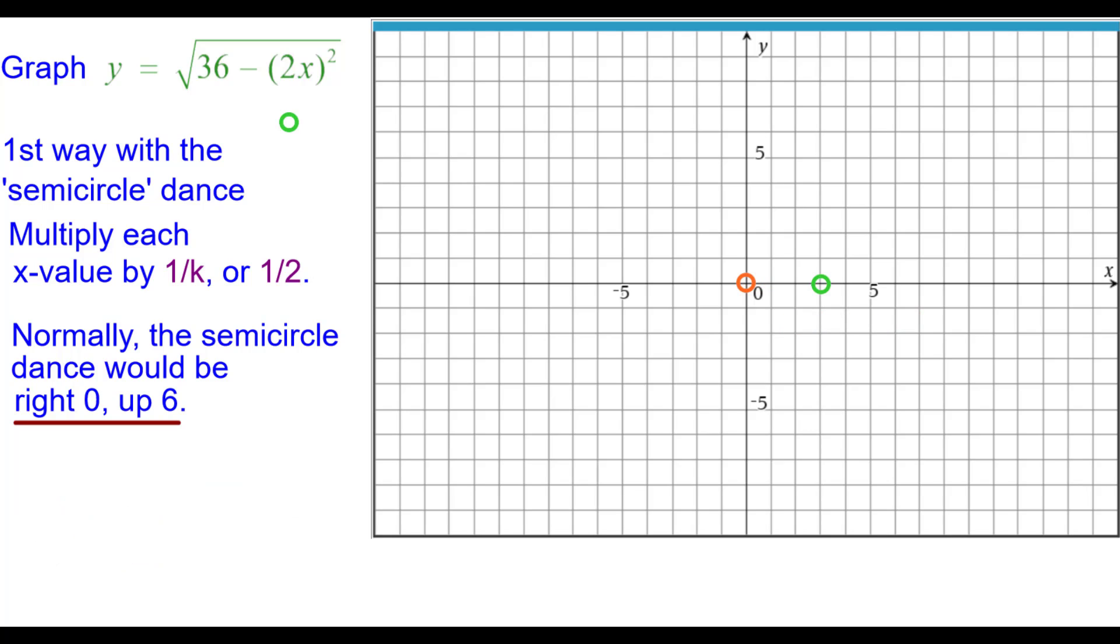Normally the next step would be right 0 up 6, and here the same stays at right 0 up 6, because half of 0 is 0. Again, the y coordinate is unchanged.